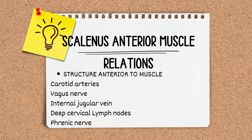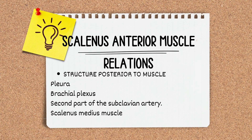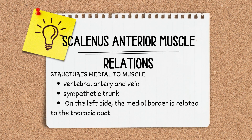The scalenus anterior muscle descends almost vertically from the vertebral column to the first rib. The carotid arteries, vagus nerve, internal jugular vein, deep cervical lymph nodes, and the phrenic nerves are the structures present anterior to the scalenus anterior muscle. The pleura, brachial plexus, and the second part of the subclavian artery, along with the scalenus medius muscle, are present posterior to the scalenus anterior muscle.